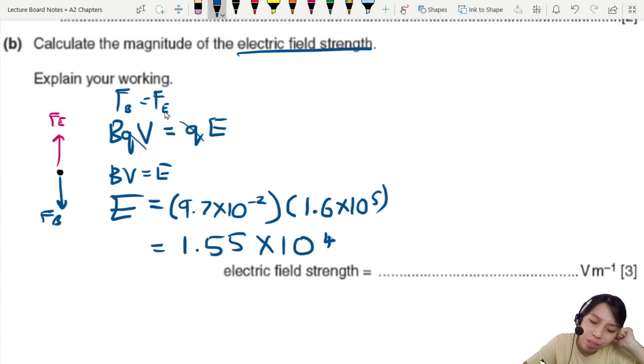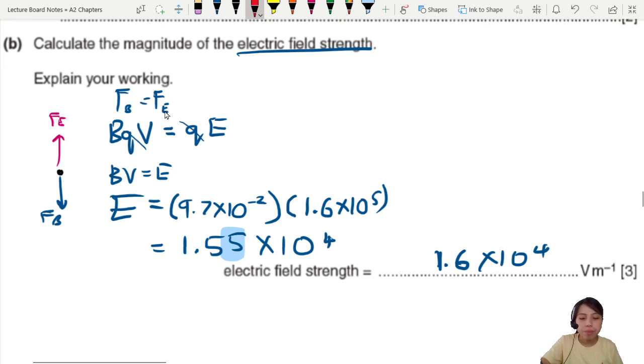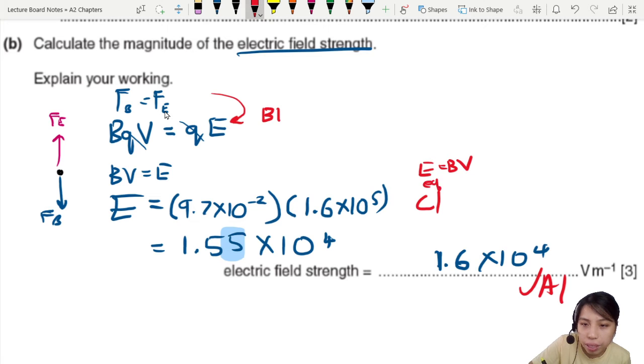What is V? Velocity of the particle. Did they give it to us? Yes, 1.6 times 10^5. So we write that, 1.6 times 10^5. What's the final answer? We should get about a very quite strong electric field strength, 1.55 times 10^4. Should I round off to 1.6? I guess I could, but if there's a further calculation I will use 1.55.